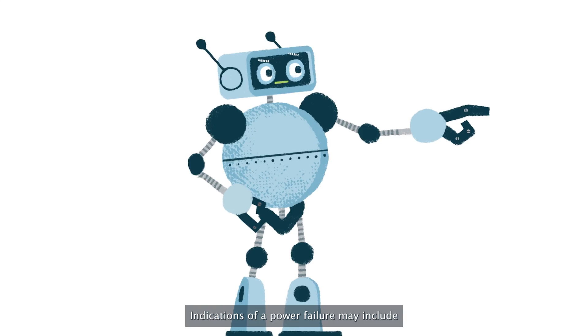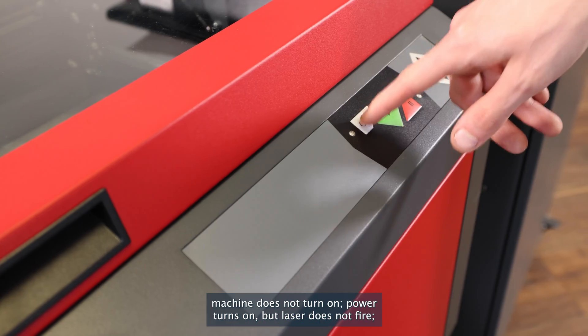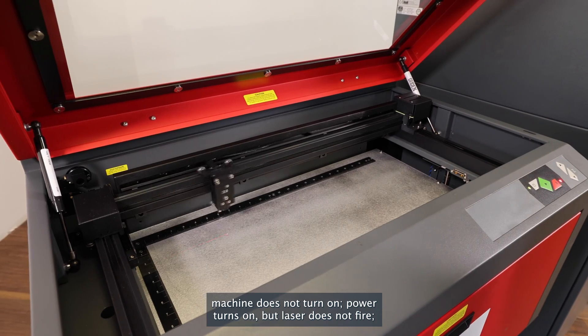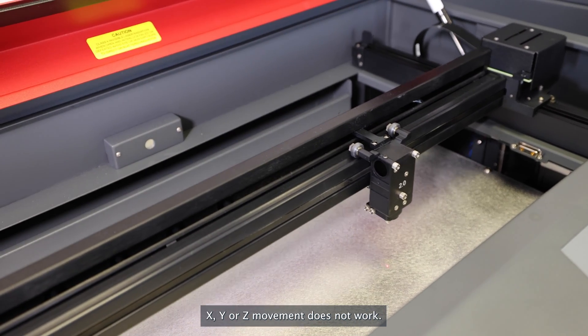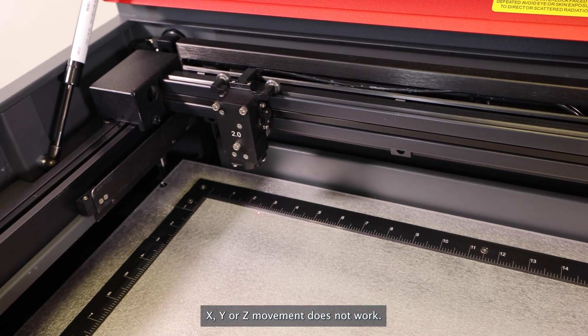Indications of a power failure may include machine does not turn on, power turns on but laser does not fire, X, Y, or Z movement does not work.